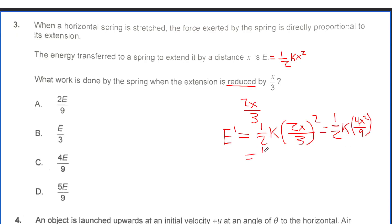Which is going to equal 1 half k times 4x squared over 9. And rearranging this, we get 4 over 9 times 1 half k x squared, which is equal to 4 over 9 E, because this right here is equal to E.